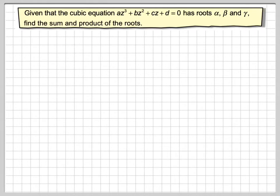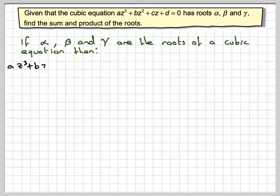So this is a very similar process to what we did with quadratics. If alpha, beta, and gamma are the roots of a cubic equation, then az³ plus bz² plus cz plus d could be written as a times z minus alpha, z minus beta, z minus gamma.